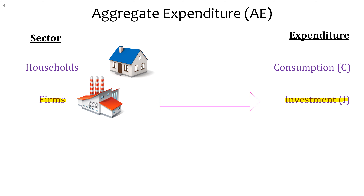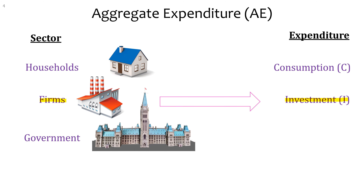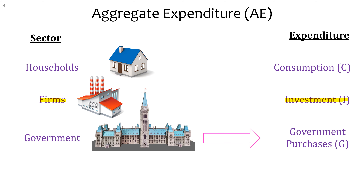Who else spends money other than households and firms? The government. They spend money on roads, the police, schools and hospitals, or the army. All of that is classified as government purchases, and the symbol is G.